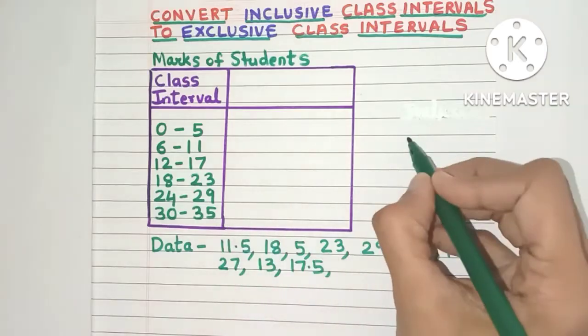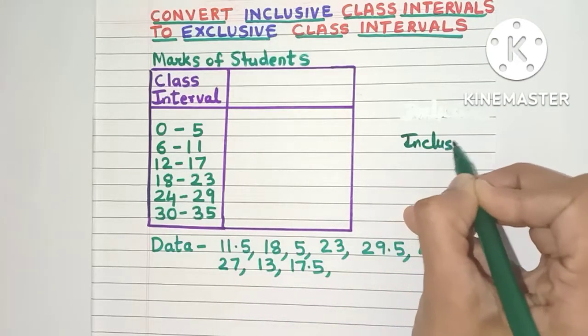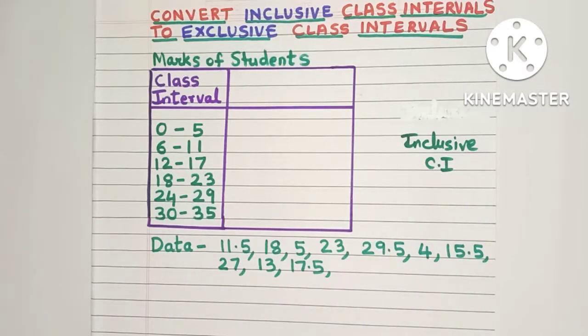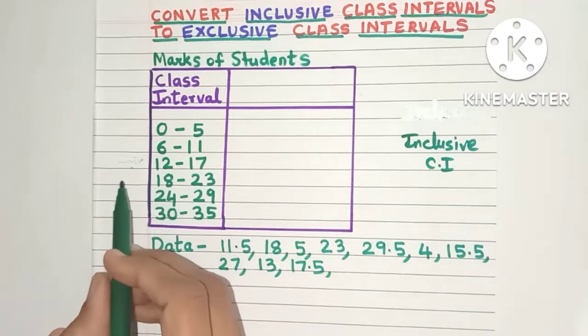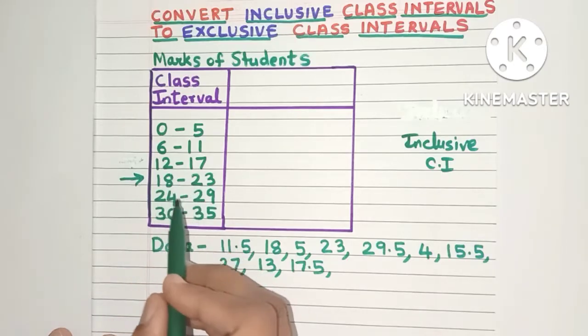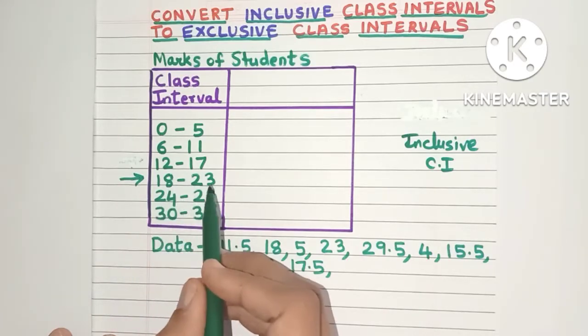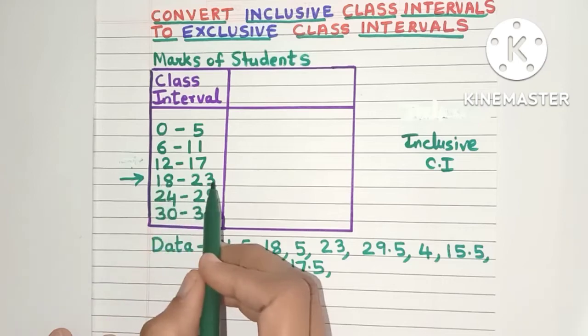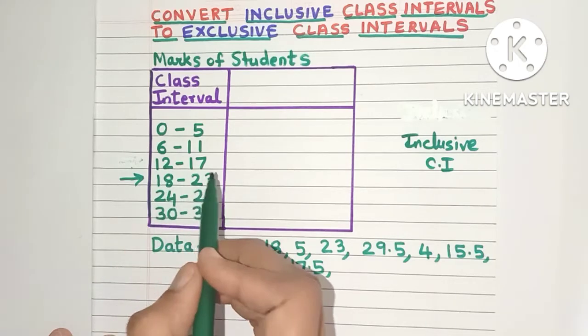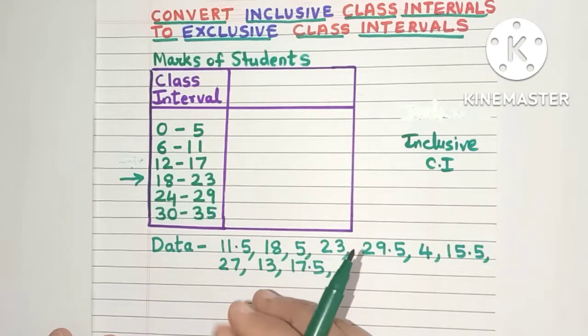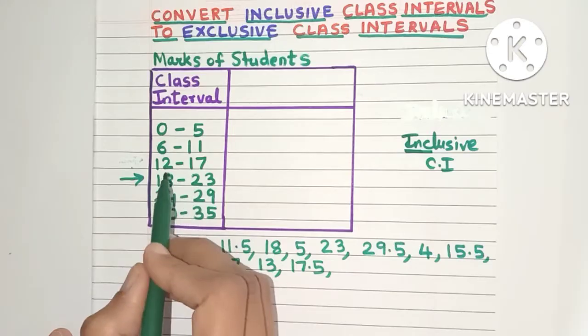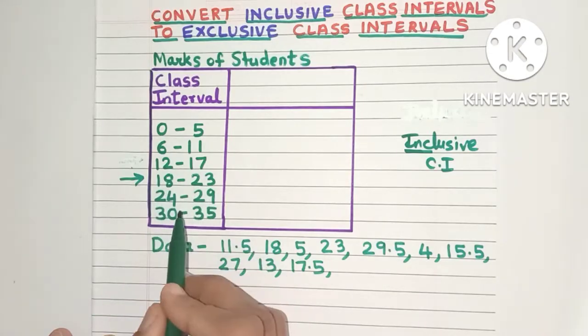Now these class intervals are known as inclusive class intervals. So if I take this class interval say 18 to 23, they will contain all marks from 18 to 23 including 18 and 23. So the lower limit and the upper limit of the class interval are included in it. That's why it's known as inclusive because it includes both the upper and the lower limit of the class interval.